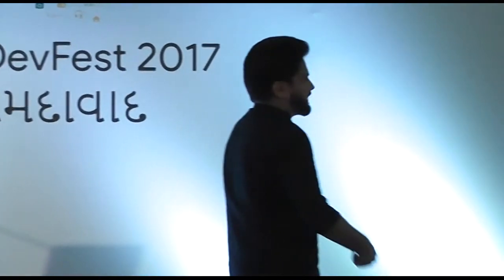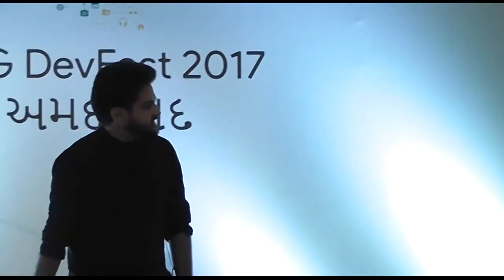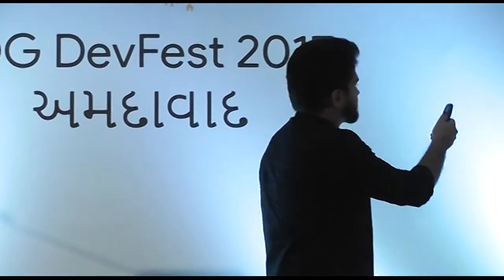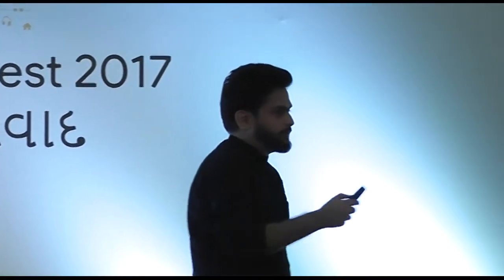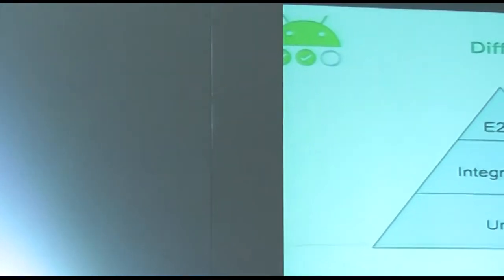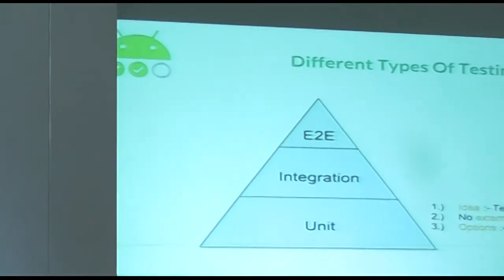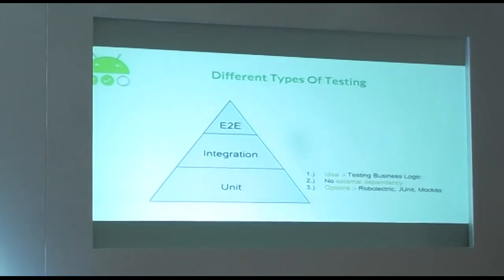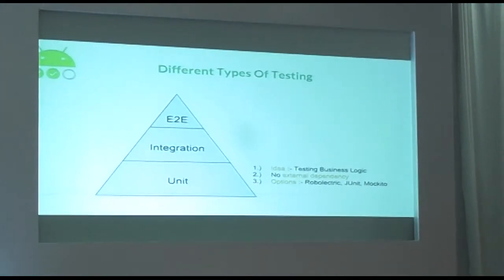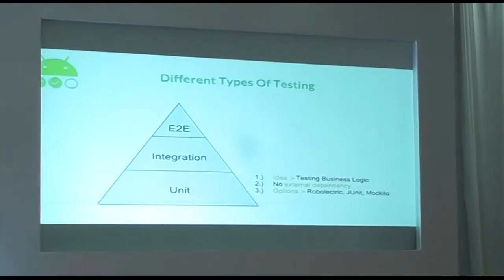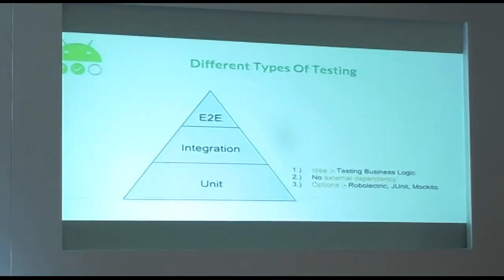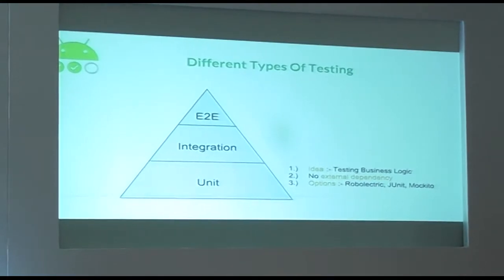Before diving into different approaches of testing, let's focus on the basic guidelines — the testing pyramid. What this pyramid says is that your unit tests should be at the bottom, forming the fundamental blocks of your test suite, and they should be in abundance. Then more priority should be given to integration tests, and then to end-to-end tests. Tools available for unit testing your app are RoboElectric, JUnit, and Mockito to mock dependencies.